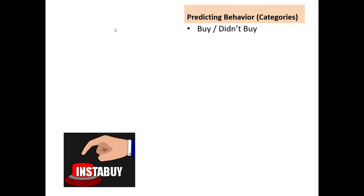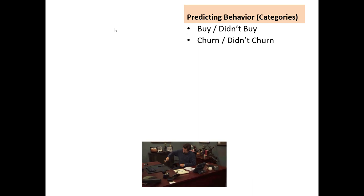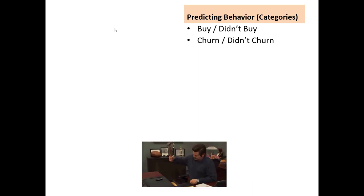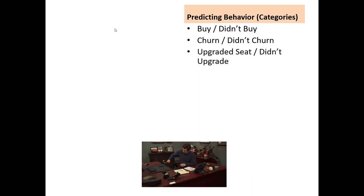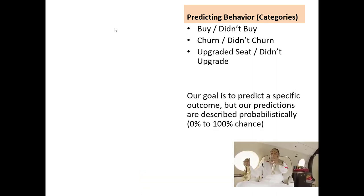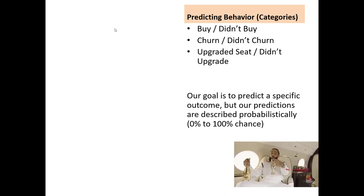What we're moving towards is learning how to predict behavior or specific categories. For example, whether or not someone did buy or didn't buy — a specific discrete behavior. Whether they churned or didn't churn from a telecom company. Whether they upgraded their seat or didn't upgrade on an airline. Our predictions won't be strictly categorical but rather probabilistic — we'll estimate between a zero and 100 percent chance that someone will do a behavior.